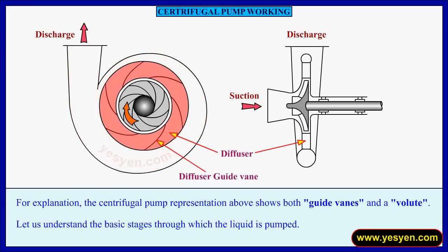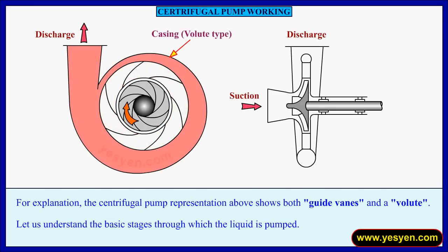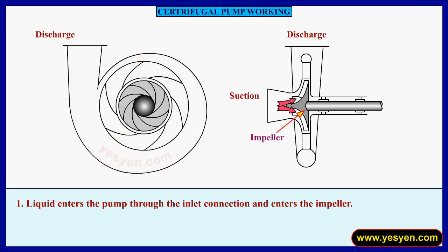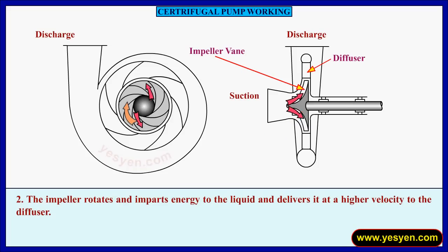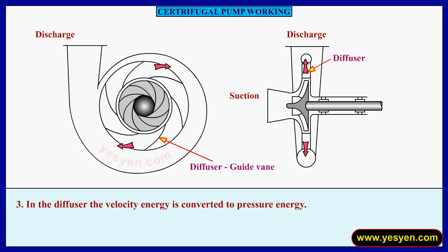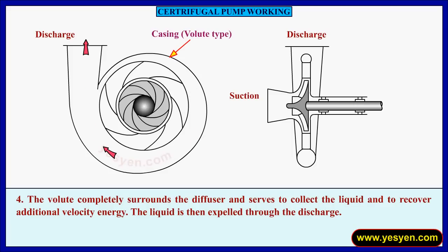The centrifugal pump representation shows both the guide vanes and the volute. Liquid enters the pump through the inlet connection and enters the impeller. The impeller rotates and imparts energy to the liquid, delivering it at a higher velocity to the diffuser. The vanes of the diffuser are tangential to the impeller. In the diffuser, the velocity energy is converted to pressure energy. The volute completely surrounds the diffuser and serves to collect the liquid and recover additional velocity energy. The liquid is then expelled through the discharge.